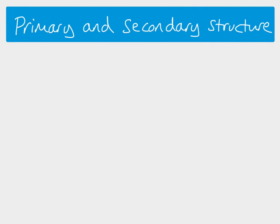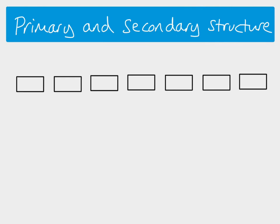We need to talk about the different levels of structure in a protein. If we have a polypeptide chain with lots of different amino acids — here's an example of a sequence, seven amino acids long — each amino acid has a three-letter code. The sequence of amino acids in the polypeptide chain is what we call the primary structure. It's very important because a different primary structure means a different sequence of amino acids, which will then affect the secondary structure, the tertiary structure, and therefore the properties and function of that protein.